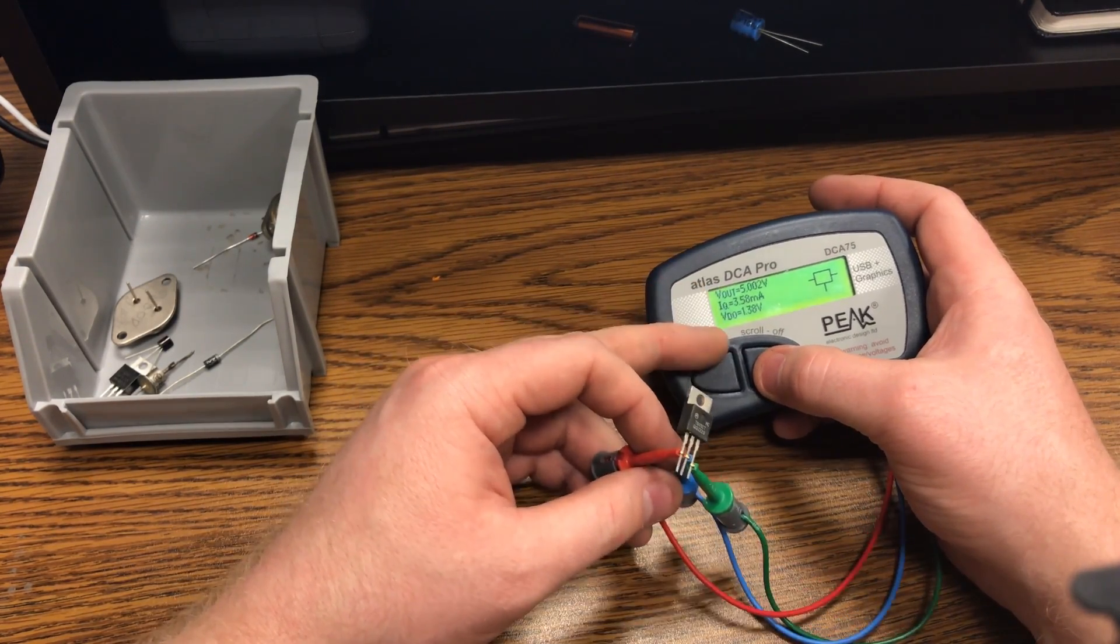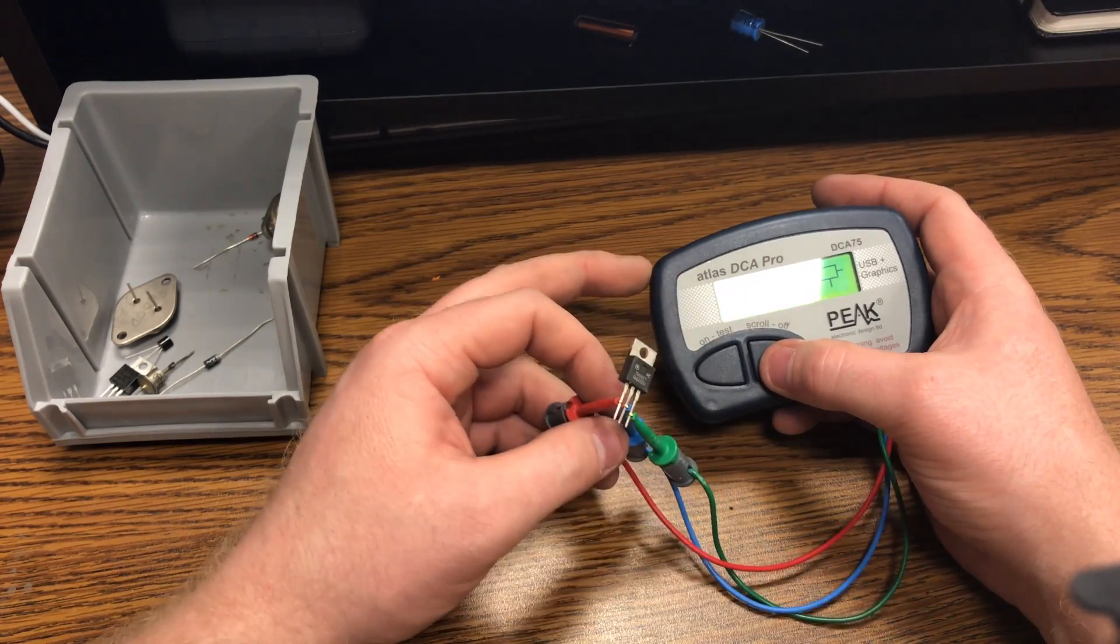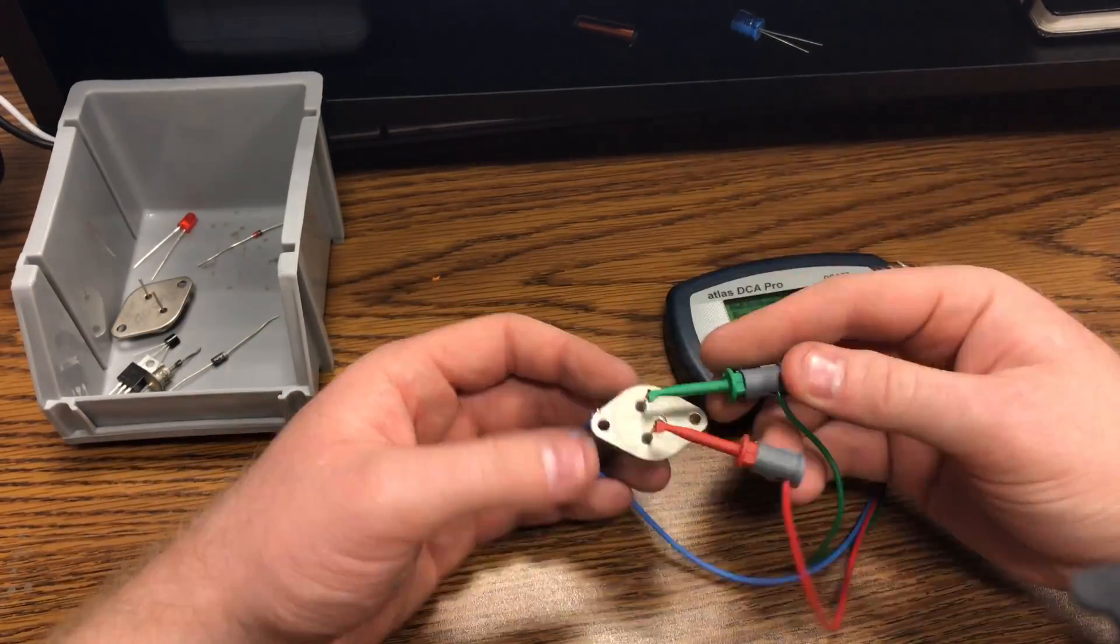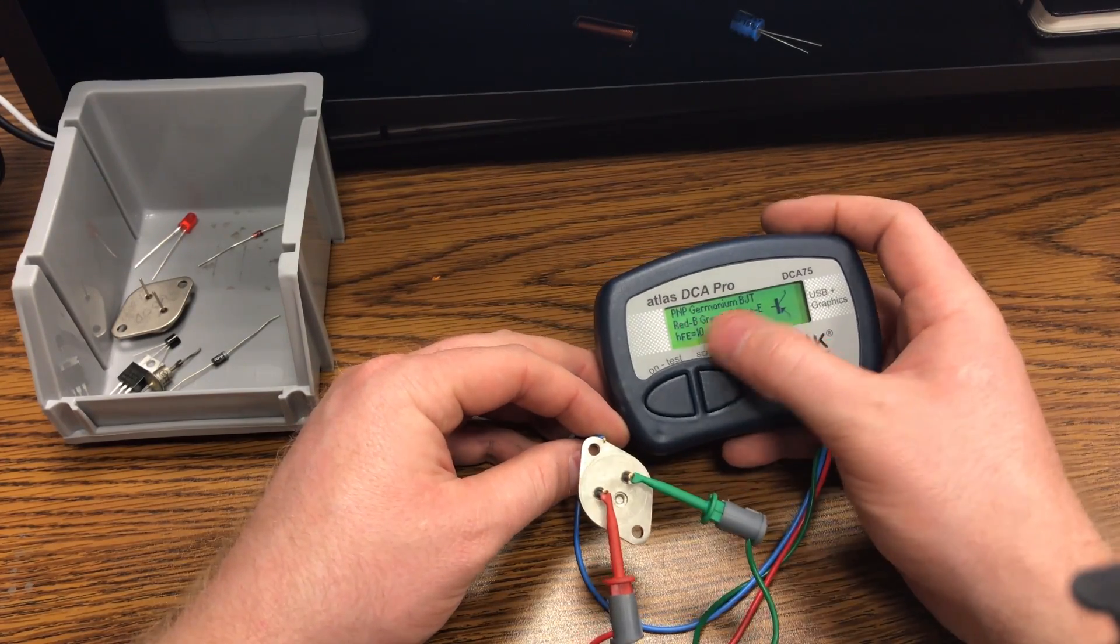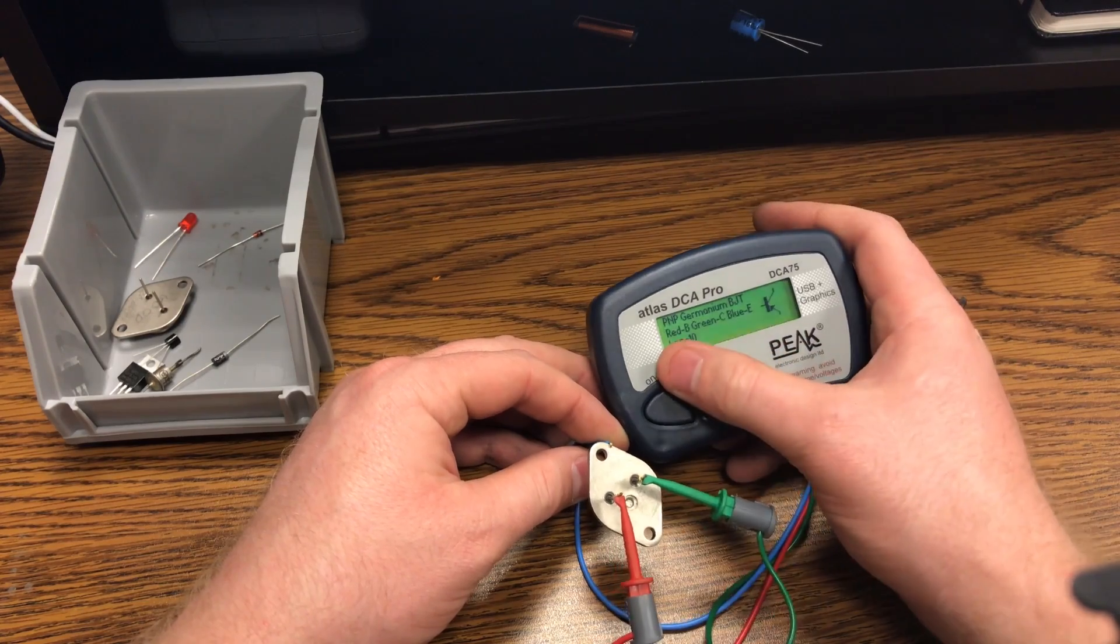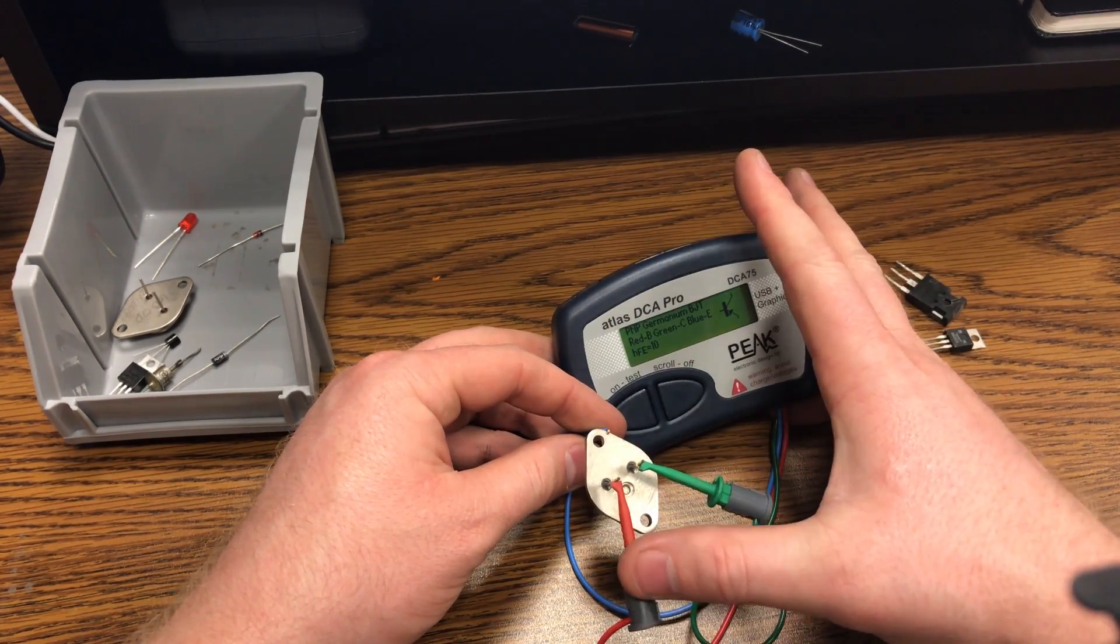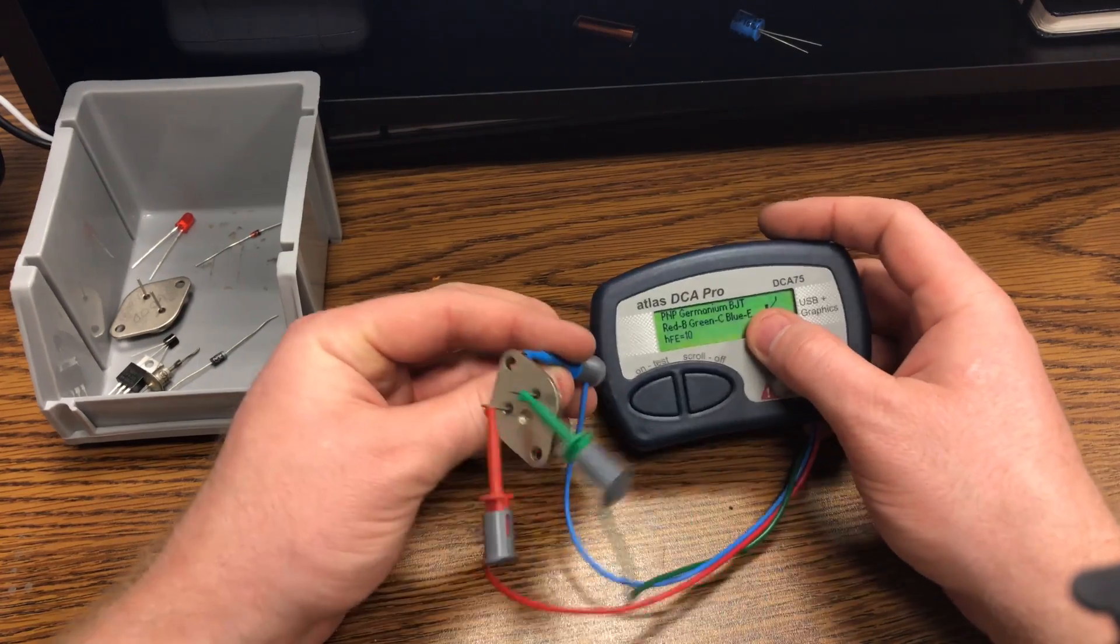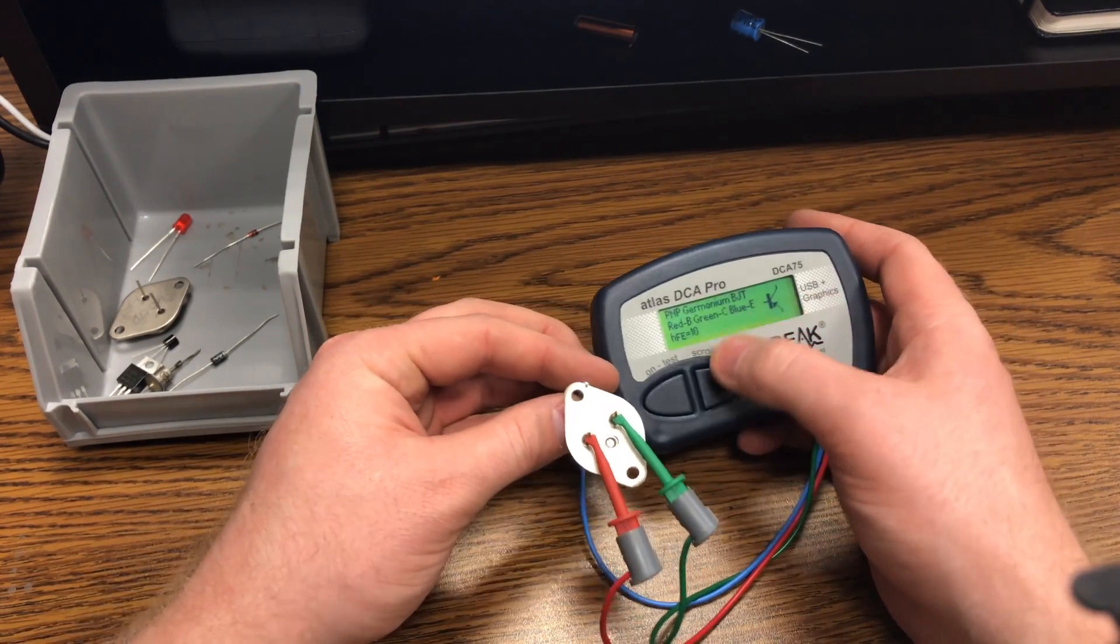It knows it's a PNP germanium BJT, and it knows that the red lead is connected to the base, the green to the collector, and blue connected to the emitter, and you have your settings here.